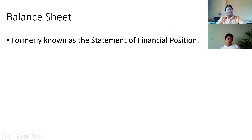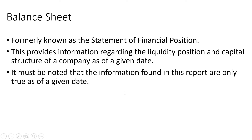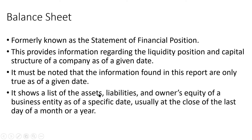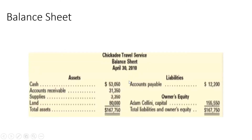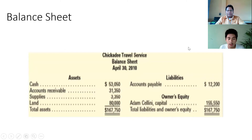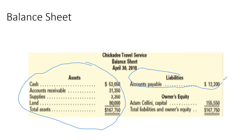The next financial statement is the balance sheet, known as the statement of financial position. It provides information regarding the liquidity position and capital structure of the company as of a given date — the information is only true as of that date. It shows the assets, liabilities, and owner's equity as of a specific date, usually at the close of the last day of a month or a year.